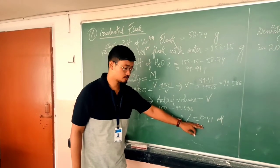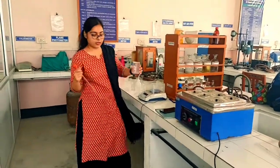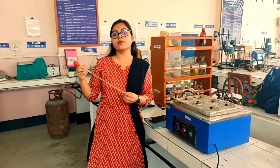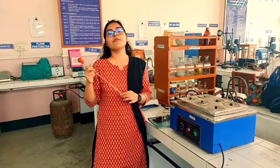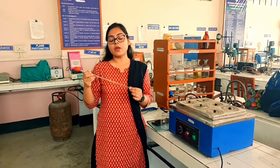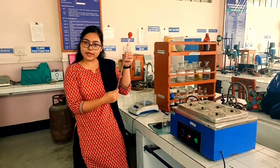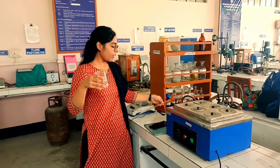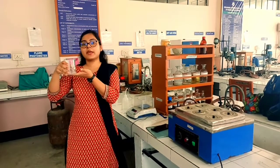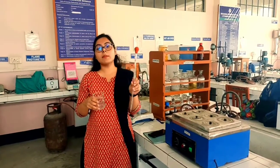Therefore, the volumetric flask that we are using has an error of plus or minus 0.41 ml. Next we will use this pipette in order to do the calibration. We don't have any method to directly weigh the amount of water which this pipette can hold. So what we will do is take water in this pipette and transfer the content from this pipette to this beaker. Then we will take the weight of this beaker. By this weight we can find what is the error in this 10 ml pipette.